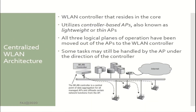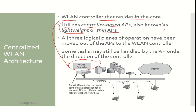Centralized wireless LAN architecture uses a wireless LAN controller that resides in the core and utilizes controller-based APs, also known as lightweight or thin APs. All three logical planes of operation have been moved out of the APs to the wireless LAN controller, though some tasks may still be handled by the AP under the direction of the controller. The wireless LAN controller manages and controls the thin APs.